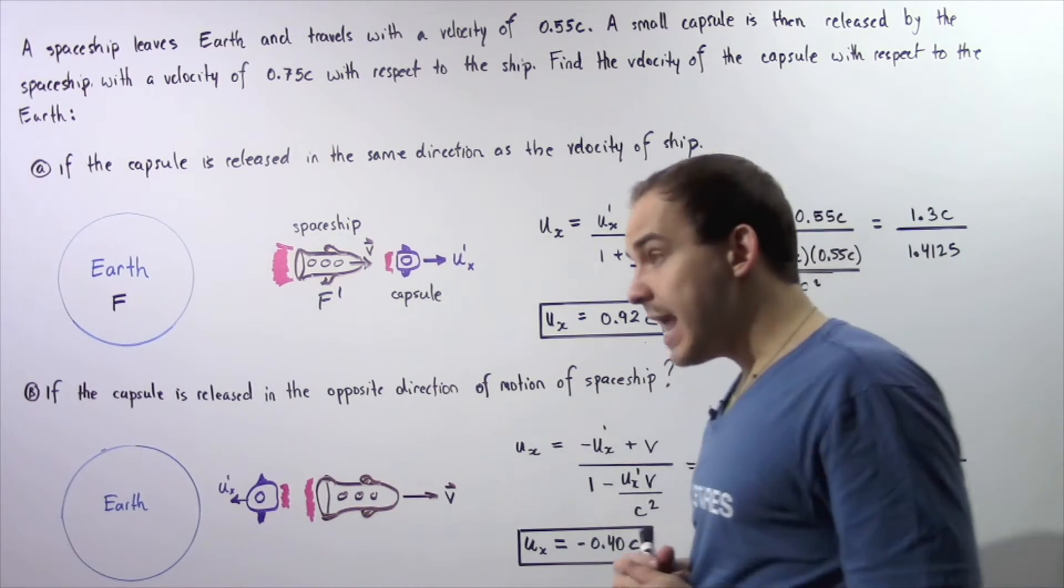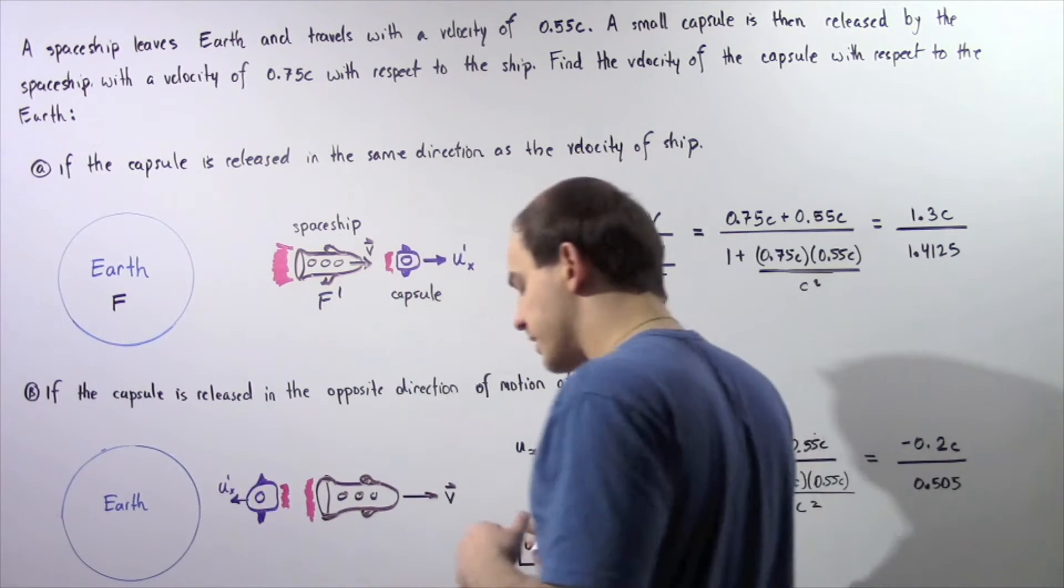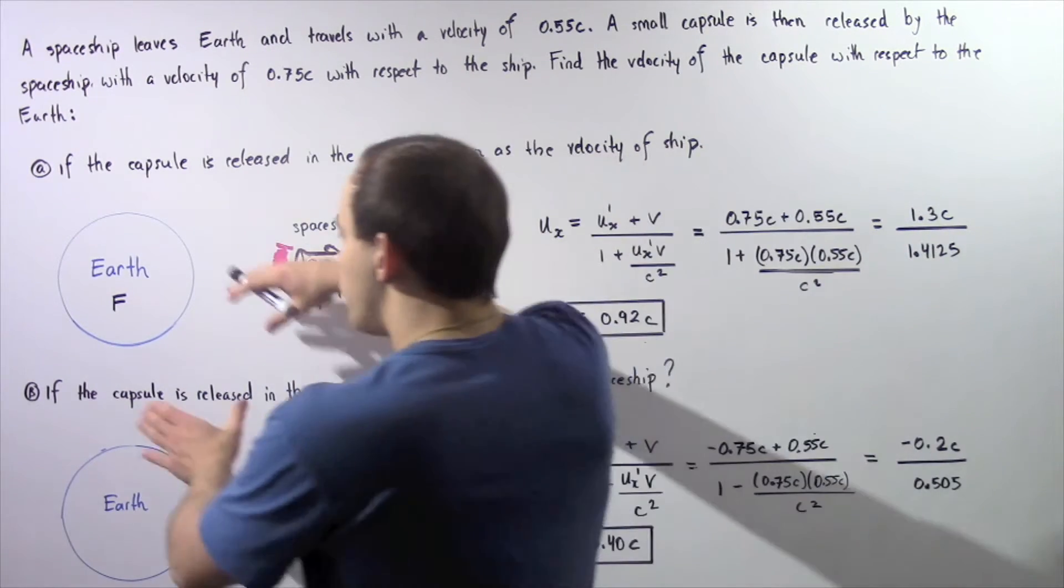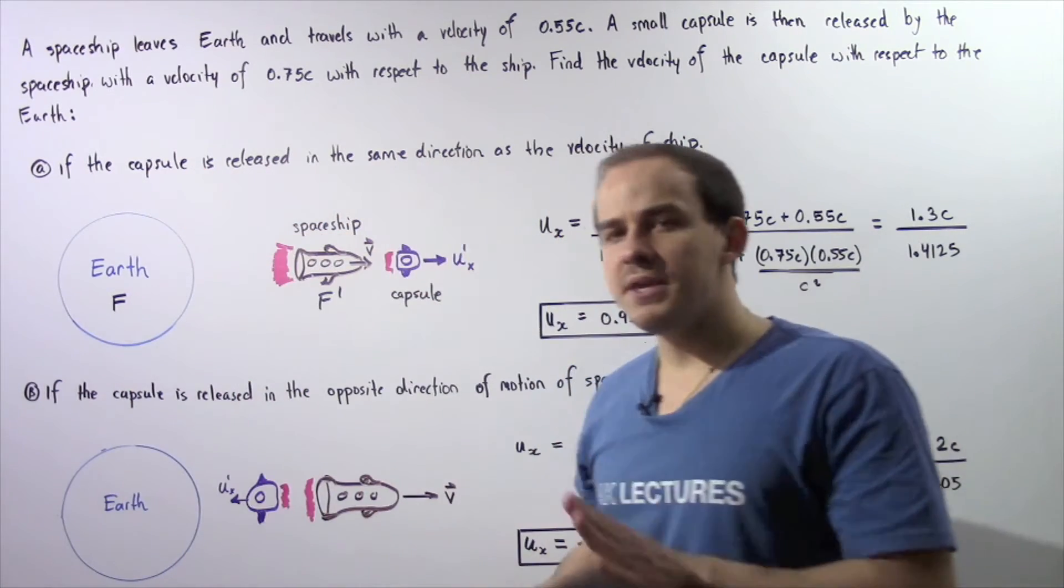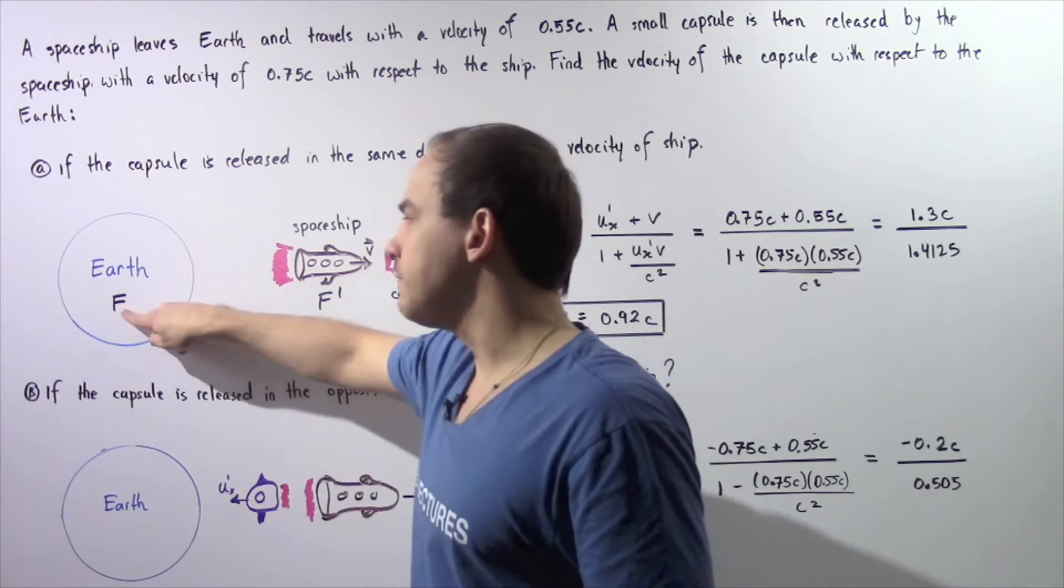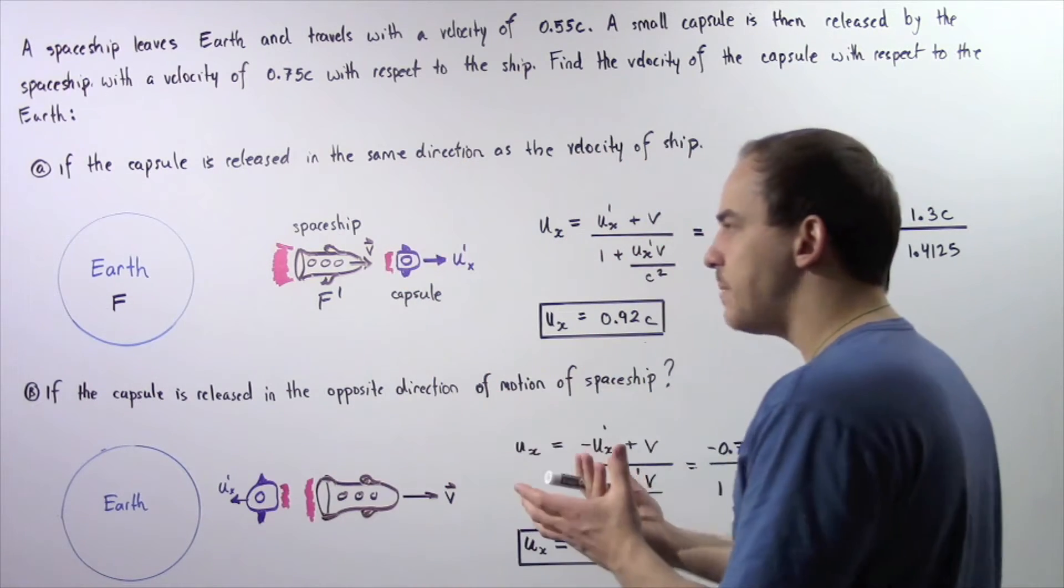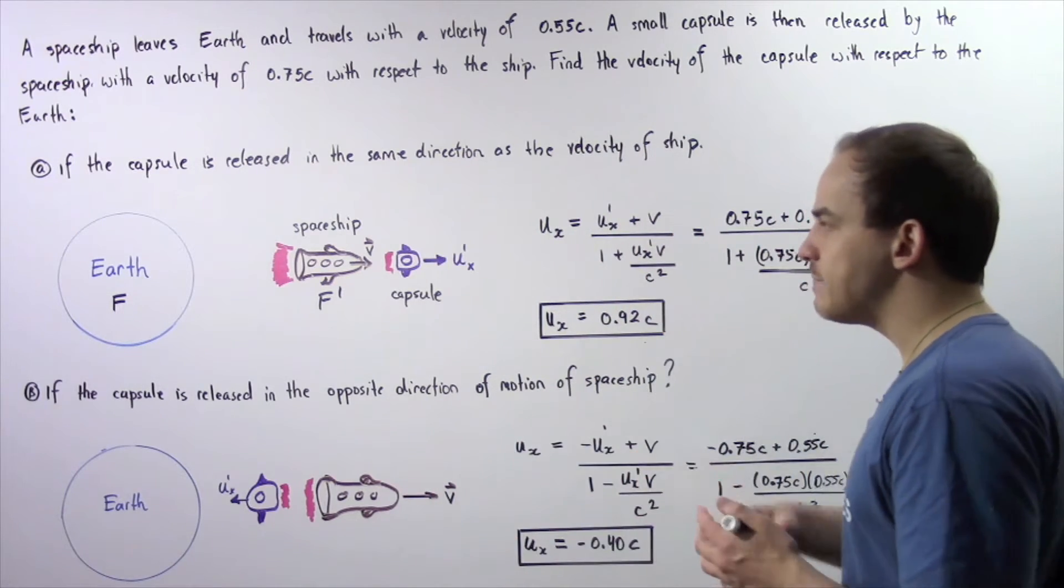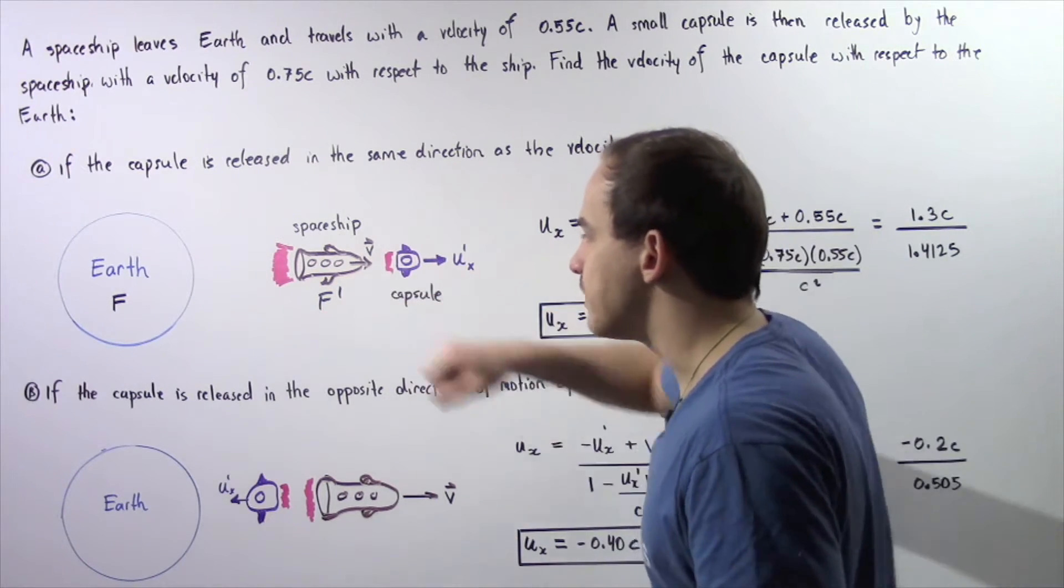Let's begin with part A by looking at the following diagram which describes what is taking place. We have the Earth which is assumed to be our stationary inertial reference frame, let's call it frame F. And the spaceship is our moving inertial reference frame, let's call it F'.